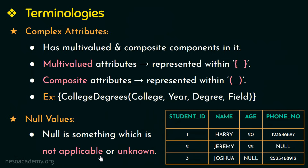Null can also be used when we don't know the value of an attribute. For example, if we don't know the phone number of a particular entity, say Jeremy, then that value would be null — meaning null is unknown. The unknown category of null can be further classified into two cases. The first case is when the value exists but is missing — for example, the age of Joshua exists but is missing. The second case is when it is not known if the value exists at all — for example, if we don't know whether student Jeremy has a phone number or not.